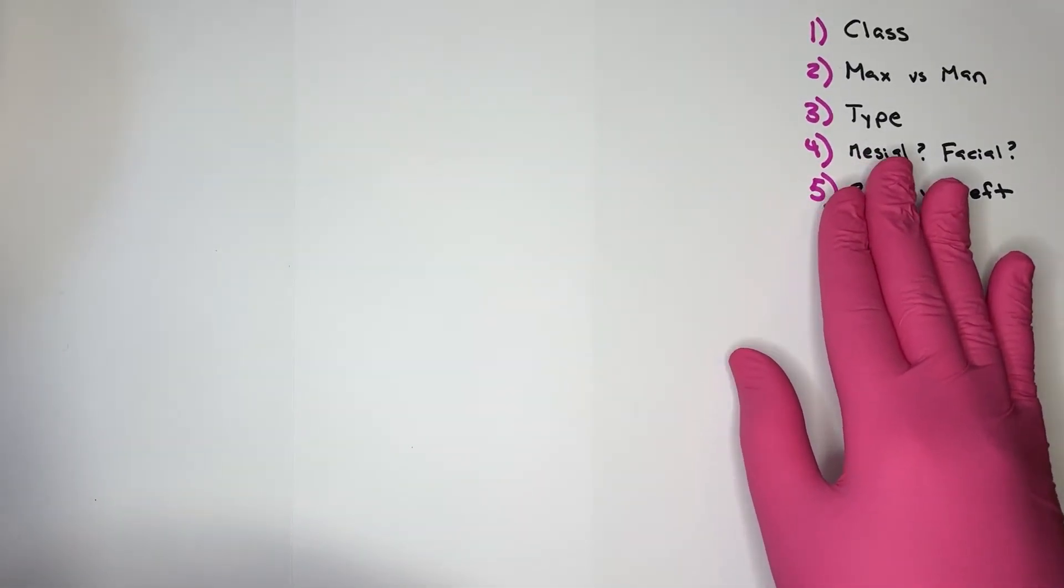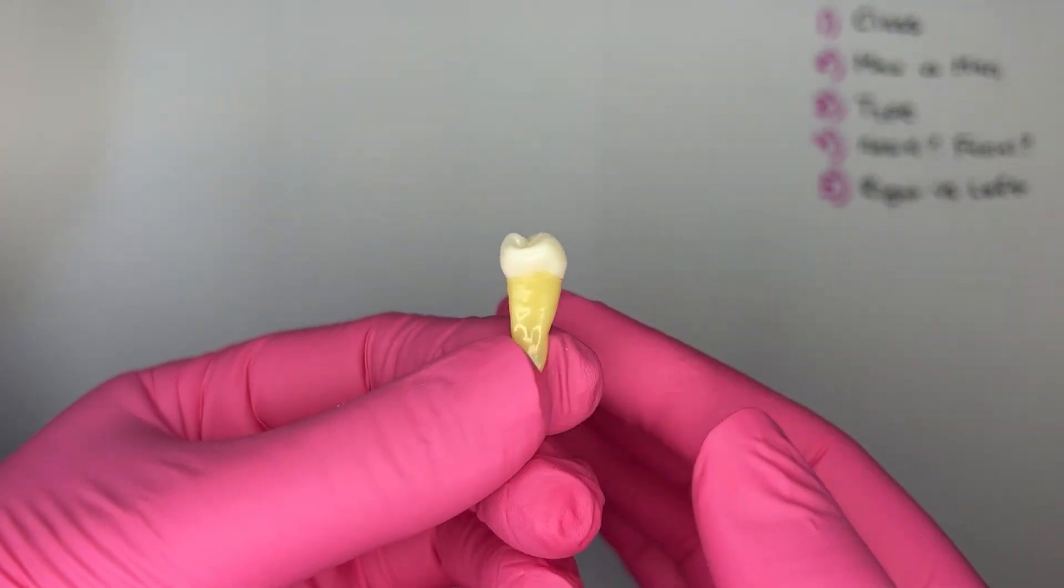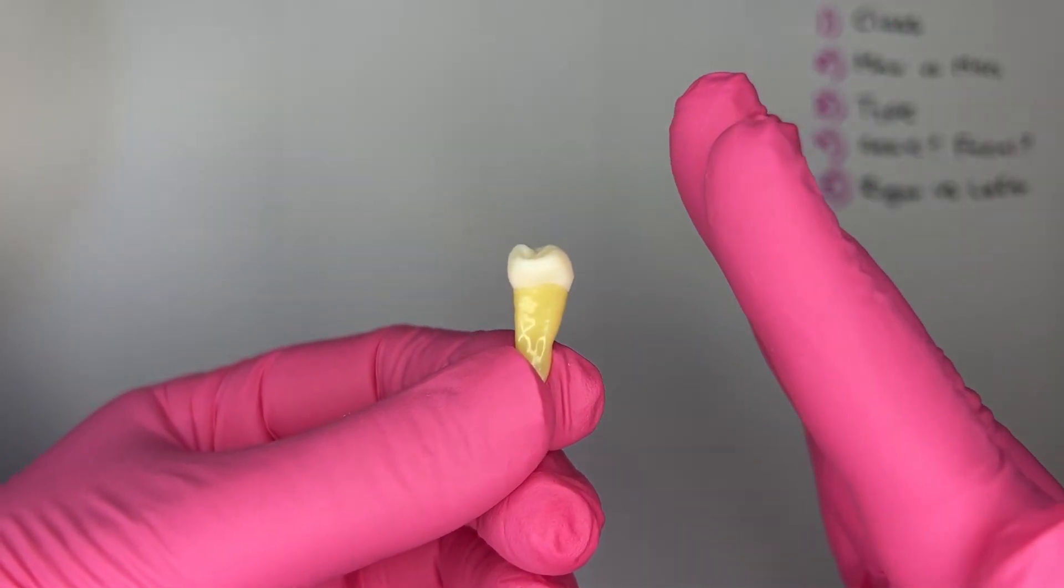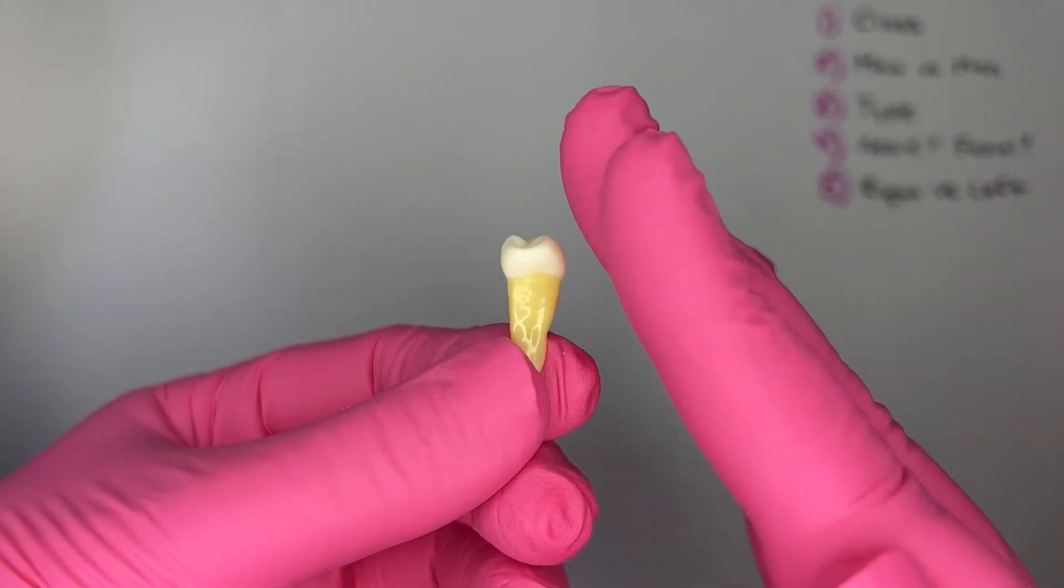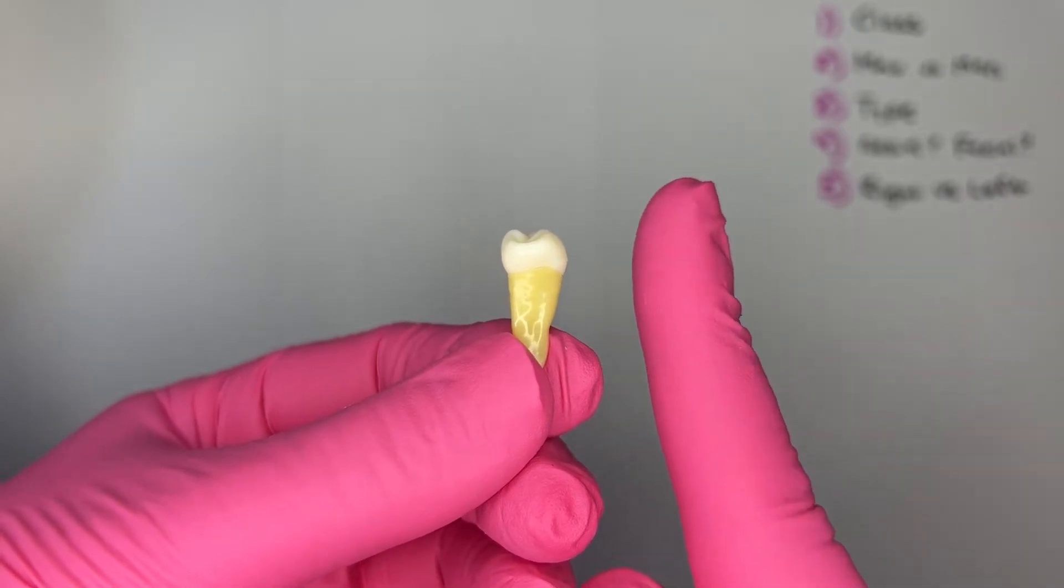Step number four, which side's which, which side is the mesial, which side is the facial. Let's figure out the facial first. Like I was saying earlier, there's a tilt to the crown. Crowns of mandibular premolars tilt towards the lingual, so this side's the lingual. This side is the facial.